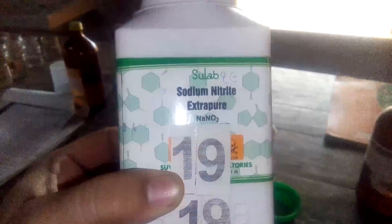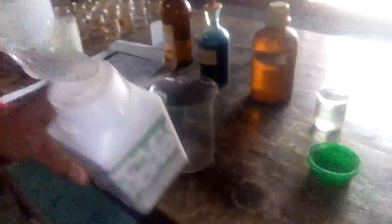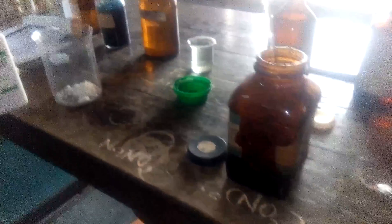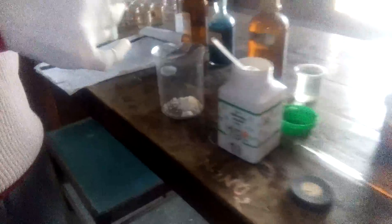First of all, take 10 grams of sodium nitrite (NaNO2) into the beaker. Now add twice that amount of cobalt nitrate into the same beaker.